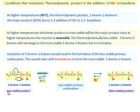Ionization of 3-bromo-1-butene would result in the formation of the less stable primary carbocation. This would react with bromide ion to form the more stable 1-bromo-2-butene.